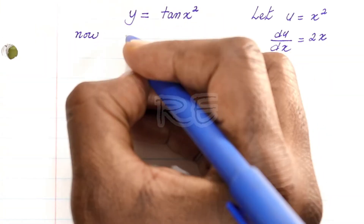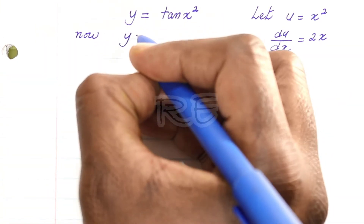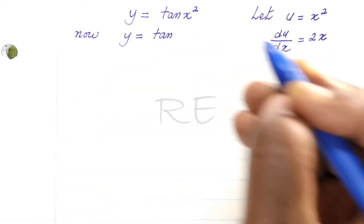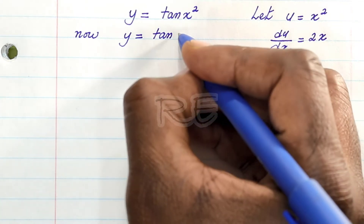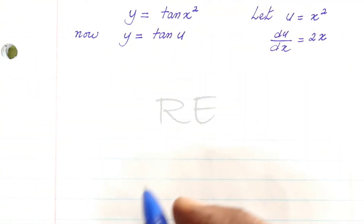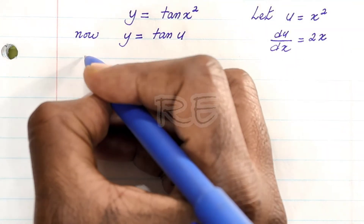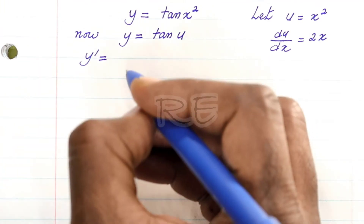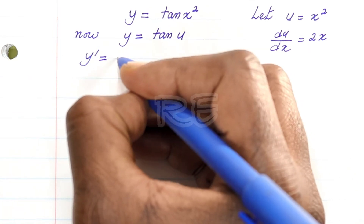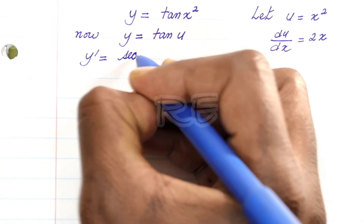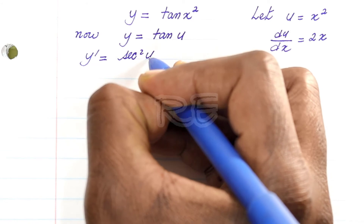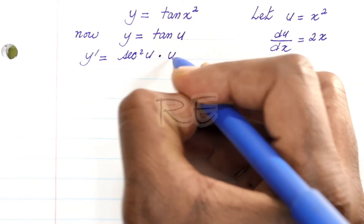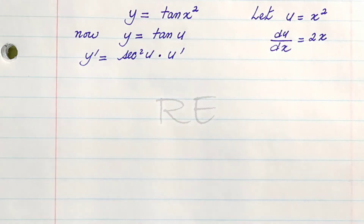Now, y can be written as 10 and x squared is u, so 10u. And according to the chain rule, y prime will be f prime of u, secant squared u, times u prime.